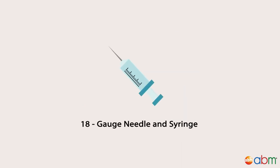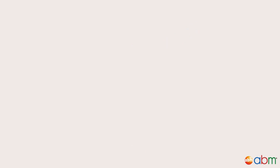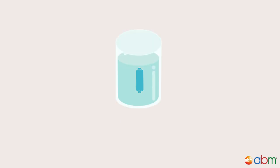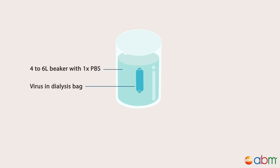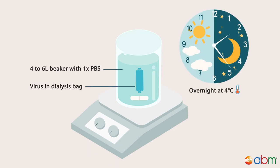Use an 18-gauge needle and syringe to release pressure at the top of the tube. Carefully extract the virus solution using the same needle from between the 25% and 40% iodixanol layers. Next, transfer virus preparations into a pre-wetted dialysis bag and dialyze in a 4 to 6-liter beaker or flask against 1× PBS or the final desired buffer. Place the setup on a magnetic stirrer overnight at 4 degrees Celsius.